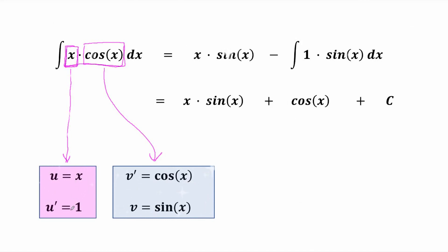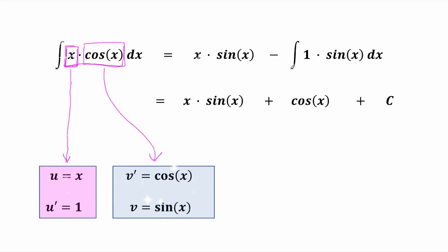Now the derivative of x is 1, so u prime is equal to 1. On the other hand, one antiderivative of cosine is the function sine x. So if v prime is cosine x, then v is sine x. We can choose any antiderivative of cosine, but for convenience we always choose the antiderivative with the constant of integration 0. Finally, by the formula of integration by parts, the given integral is equal to x times sine x minus the integral of 1 times sine x. This is equal to x times sine x plus cosine x, plus c, where c is any constant.